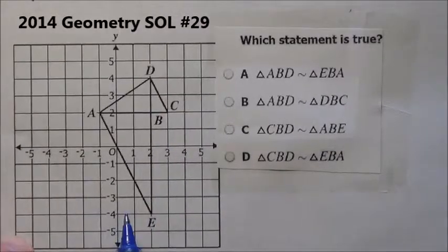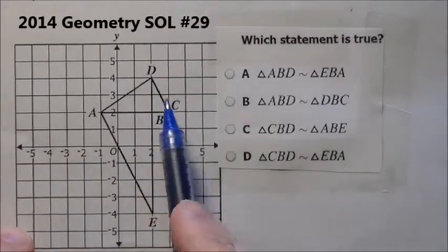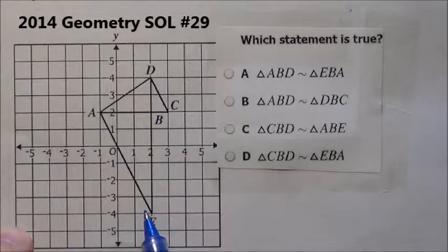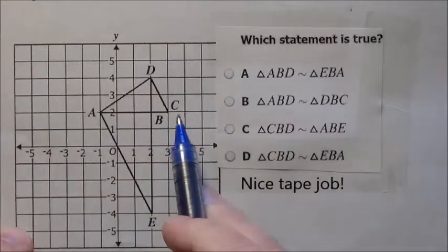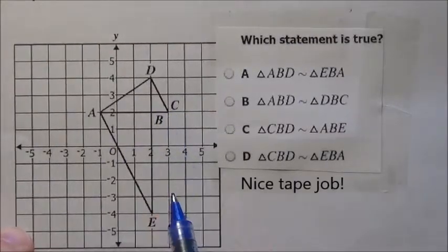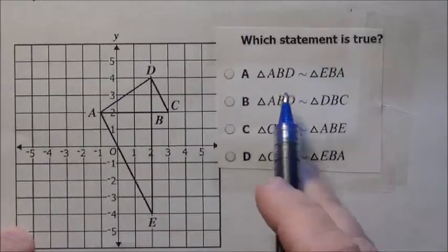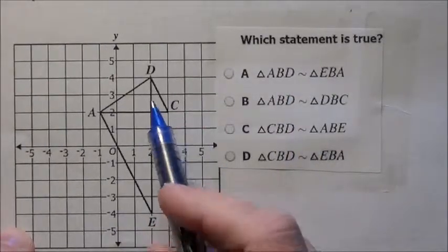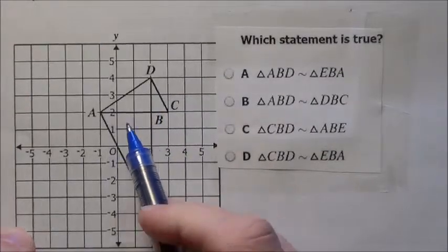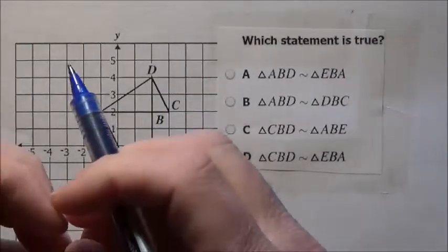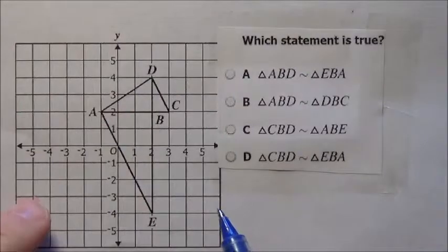Here's problem number 29. Every one of these points on the coordinate grid are vertices and all integers, so we know they hit right on the point. It asks which statement is true, and remember that similar means the ratio of the sides to the other guy's sides - everybody has either expanded or contracted at the same rate.